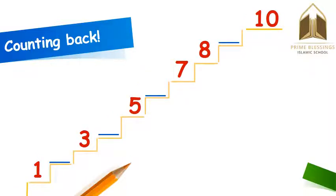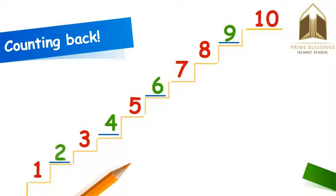Now we will count back, and we will start from ten. We are now counting back from ten. So before ten there should be nine. Then eight and seven are written. Which number should come before seven? Six. If we count back from six, five is written and then four. If we count back from four, three is written already, and then which number is missing? Two. Yes, if we count back from two: one, and then zero. This is how we have counted back from ten to zero.